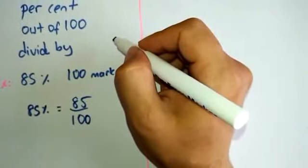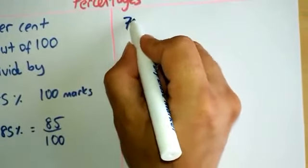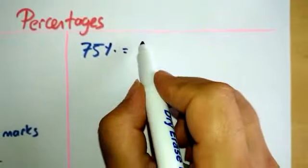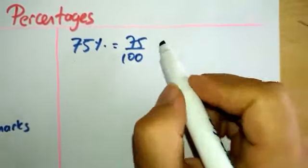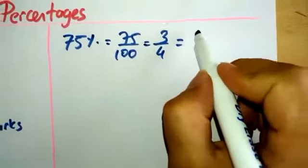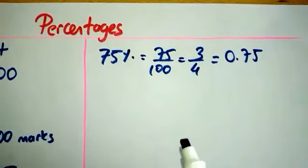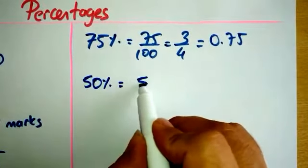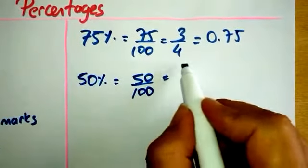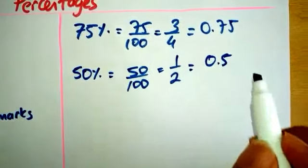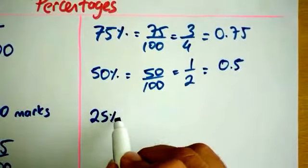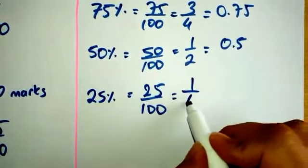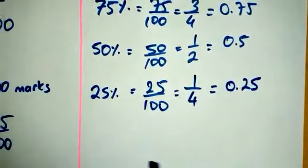Let us look at some other common percentage amounts and their fraction and decimal equivalents. For example, 75% can be written in fraction form as 75 out of 100, which is three quarters, or 0.75 in decimal format. 50% can be written as 50 out of 100, which is one half, and 0.5 as a decimal. Or 25%, which is 25 out of 100, which is one quarter, and 0.25 in decimals.